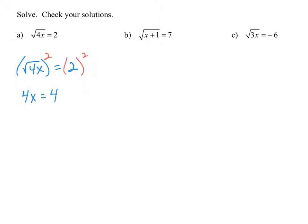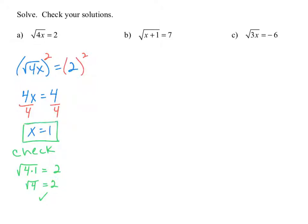By dividing both sides by 4, we get x is equal to 1 as our solution. We always want to check our answers by taking the 1 and plugging it back into the original equation for x. So we have the square root of 4 times 1. The square root of 4 times 1 is the same thing as the square root of 4, which does equal 2. So x equals 1 is the solution.